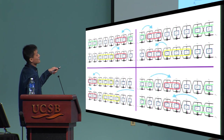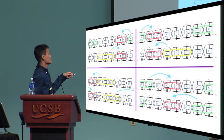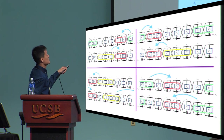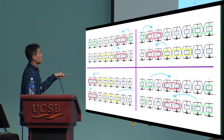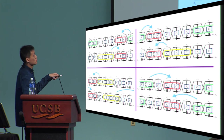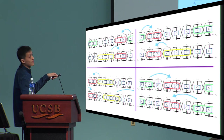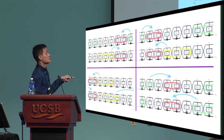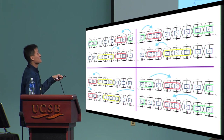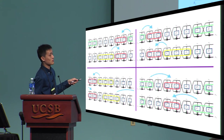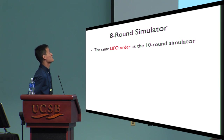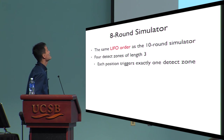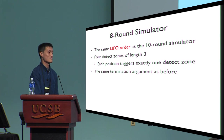This is what the 8-round simulator looks like. The red zones are the adapt zones and the green ones are the detect zones. The structure is very symmetric and each position triggers exactly one type of path. The middle adapt zone is surrounded by two queries that will remain undefined when adaptation occurs, preventing the adapted queries from filling the middle detect zone of some other path. In summary, the 8-round simulator uses the same LIFO order as the 10-round simulator, has four detect zones, and uses the same termination argument.